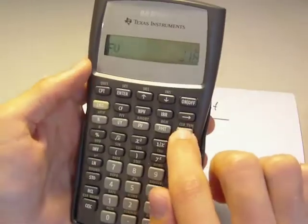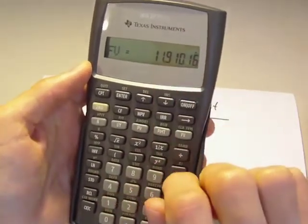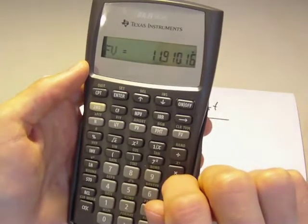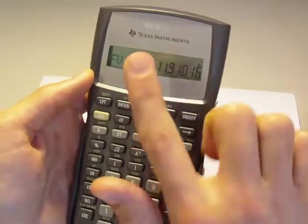So let's compute future value. And right here, this is the future value with the compounding interest, $11,910. So this is simple interest and compounding interest on a BA2+.